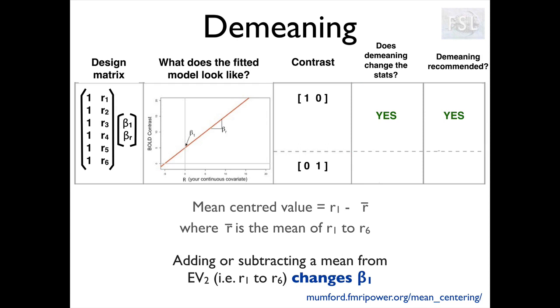The contrast we looked at before was the one-zero contrast, and as you remember, yes, demeaning does change the statistics, and so to be able to interpret this contrast correctly, we should demean our EV.